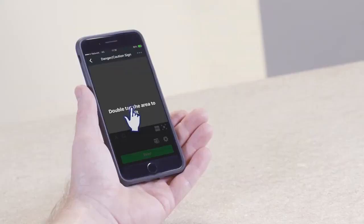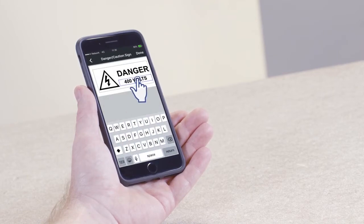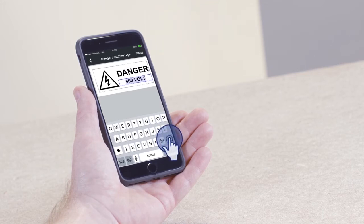A message will appear that reads, double tap the area to edit. Once in edit mode, you can alter the text as required.